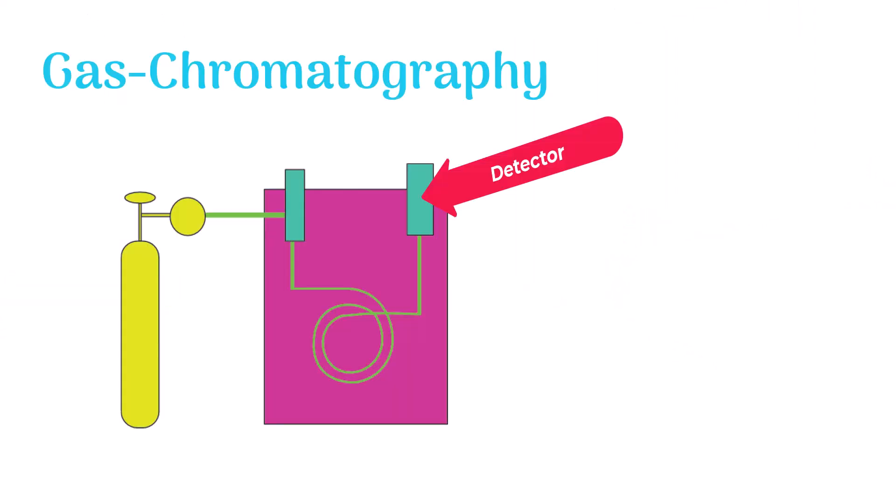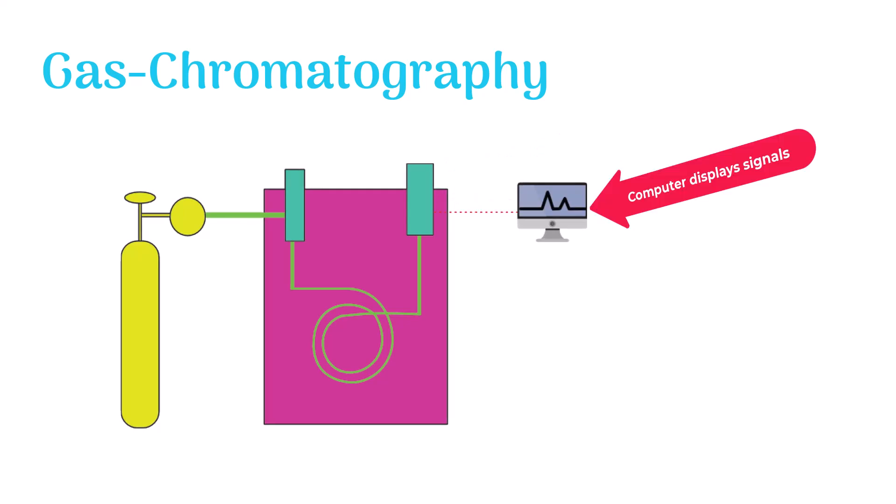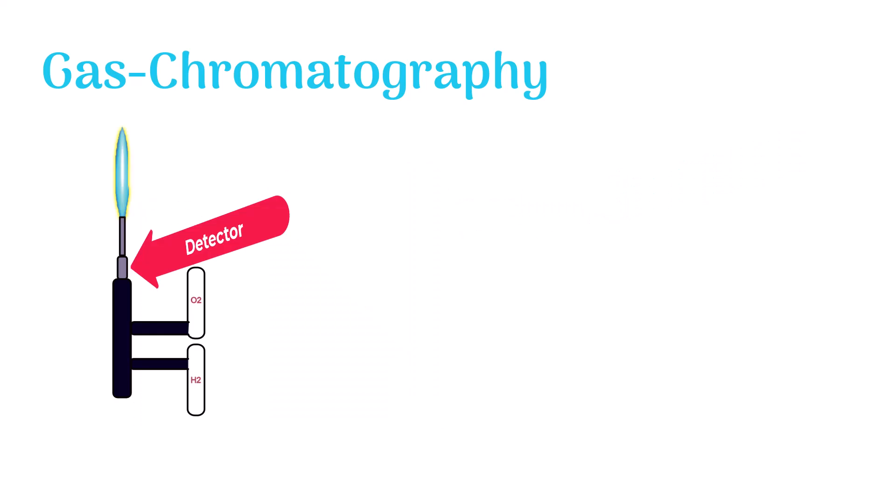The detector detects the sample molecules which are leaving the column. It sends signals to a computer which displays the signals in the form of a graph.